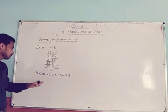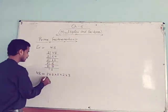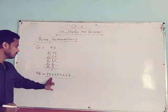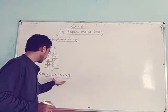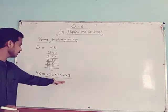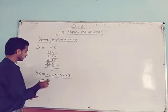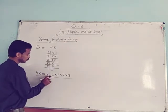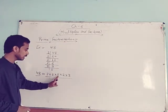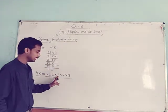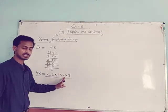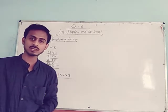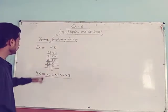These are the prime factors which, when you multiply them, give you 48. See: 2 × 2 = 4, 4 × 2 = 8, 8 × 2 = 16, and 16 × 3 = 48. Clear?